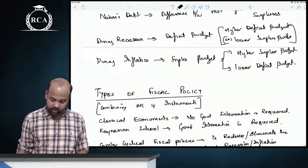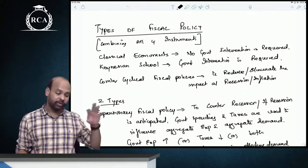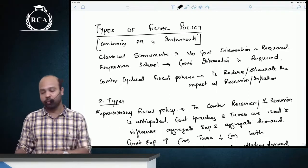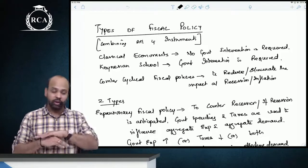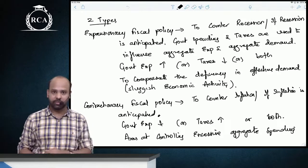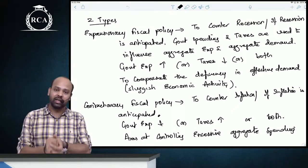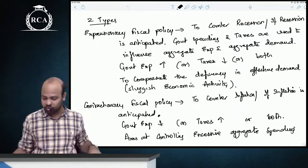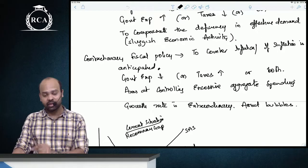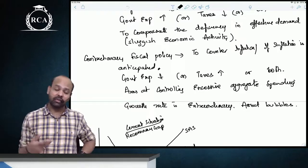There are two types of fiscal policy: contractionary and expansionary. These are counter-cyclical fiscal policies. Expansionary fiscal policy is used to counter recession or anticipated recession — government spending is increased, taxes are reduced, or a combination of both, to raise aggregate expenditure and aggregate demand. Contractionary fiscal policy aims to counter inflation or anticipated inflation — government spending is reduced, taxes are increased, or both. Government also wants to intervene when growth is extraordinary and asset bubbles are being created.